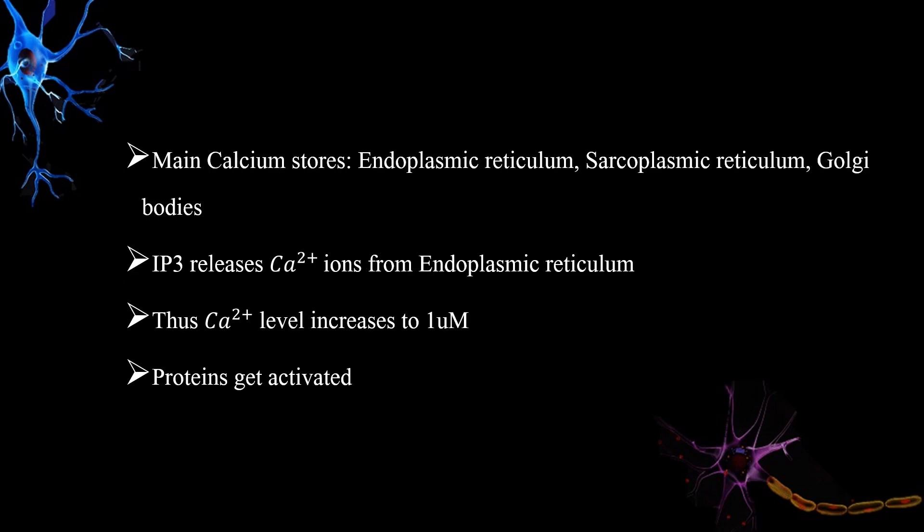The main calcium stores are the endoplasmic reticulum, Golgi bodies, and in the case of muscles, the sarcoplasmic reticulum. Inositol trisphosphate releases calcium ions from the endoplasmic reticulum, causing the calcium level to increase to a much higher concentration, which activates specific proteins.